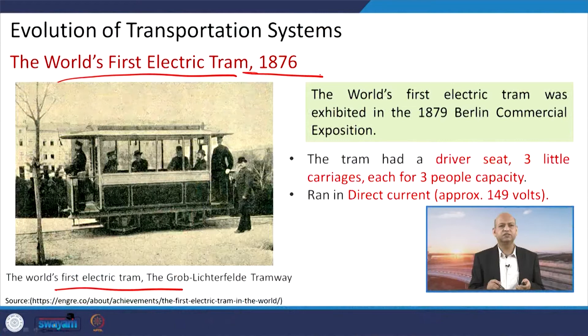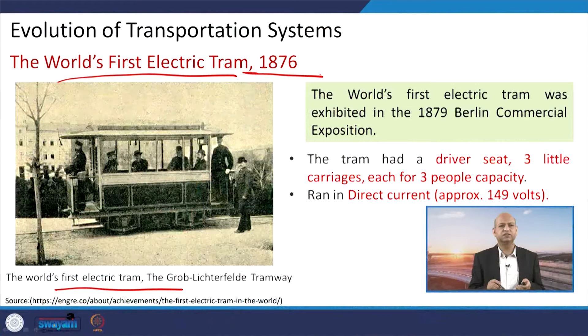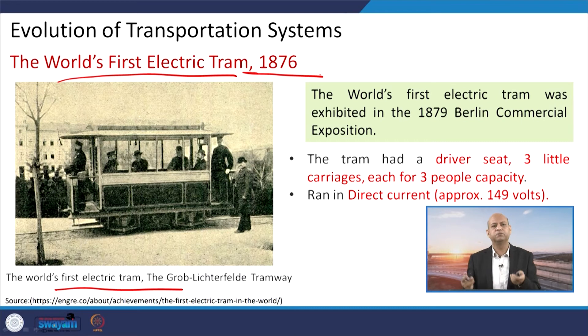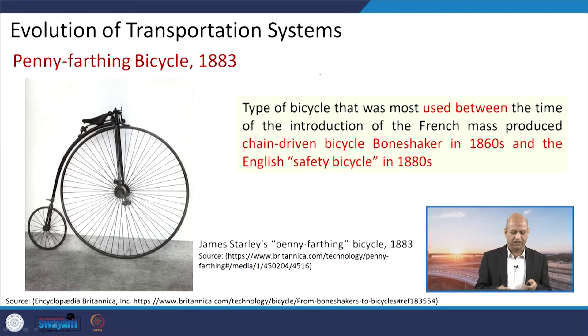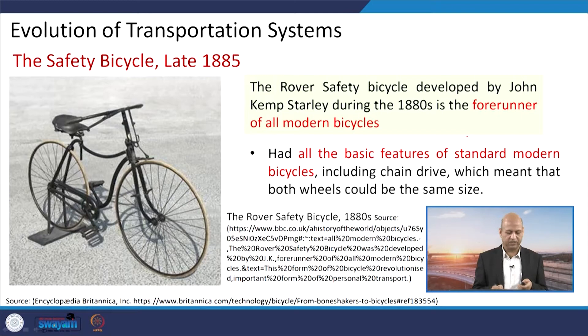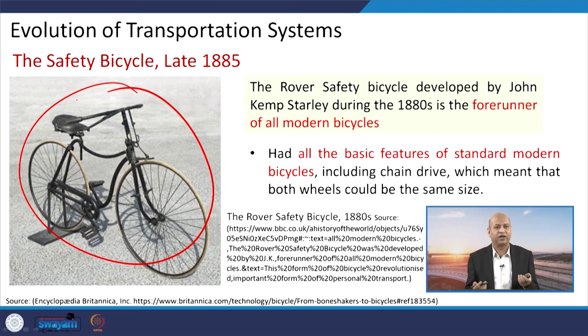In 1876, a monorail was driven by a steam engine — earlier it had been pulled by horses. This was a rear-wheel-driven rotary steam engine monorail. Also in 1876, the world's first electric tram was invented. Many kinds of inventions took place in parallel, and it took time for one invention to grow to mass popularity. Then a new kind of chain-driven bicycle evolved — this was the real model we recognize today, with chain and pedal mechanism, which became very popular. All bicycles we use today are refinements of this particular design.